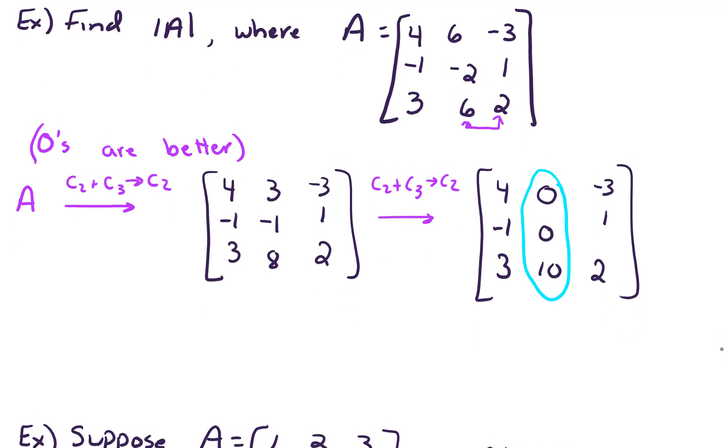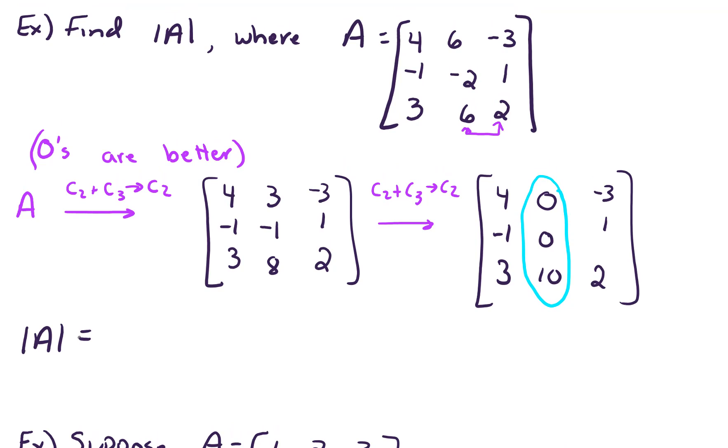So let's do that. So the determinant of A will be equal to 0 plus 0. Now we're down to 10. So the element of A times a negative 1 to the, we're in third row, second column. So that's going to be to the fifth power, times the determinant of the little 2 by 2 left over when we delete the second column and that third row. So that'll be the determinant of 4, negative 3, a negative 1, and 1. This results in a negative 10 times 4 minus 3. So final answer is negative 10.